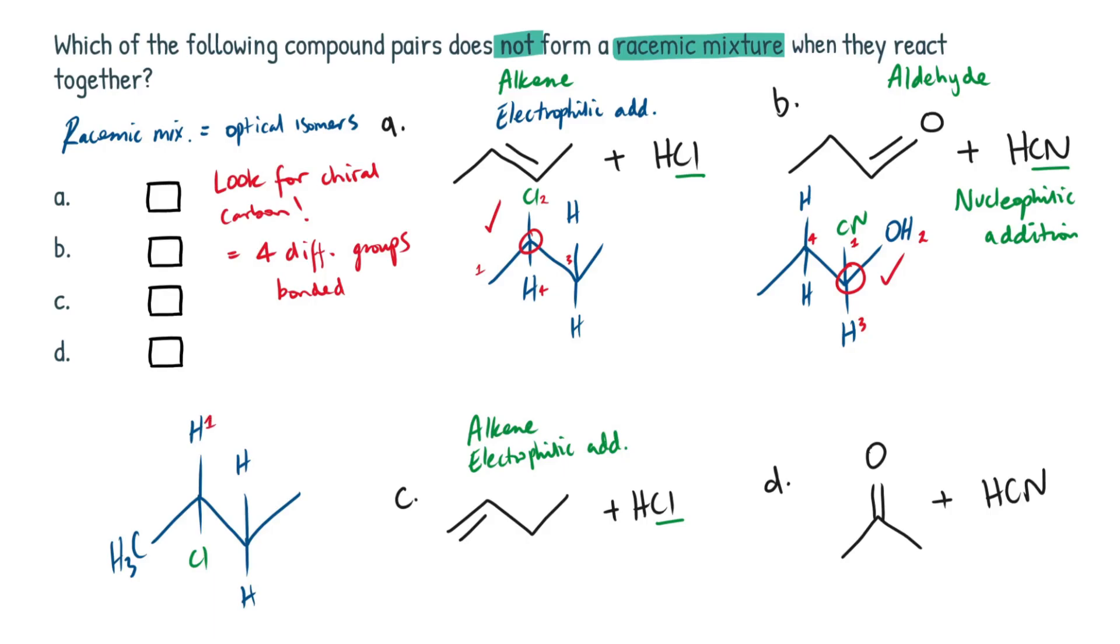So I'm going to do the exact same thing and count around this central carbon that the chlorine is attached to. We're going to have our hydrogen at the top, the R group on the right, the chlorine at the bottom, and then the methyl group on the left. So that's four different groups. Again, chiral.